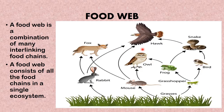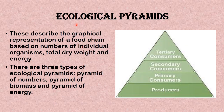Moving along, we'll be looking at the food web. A food web is a combination of many interlinking food chains. A food web consists of all the food chains in a single ecosystem. For example, we have grass eaten by the rabbit, and the rabbit eaten by the fox. Another example is grass eaten by the mouse, and the mouse eaten by the fox. I want you to pause this video and identify all the other food chains found in this food web.